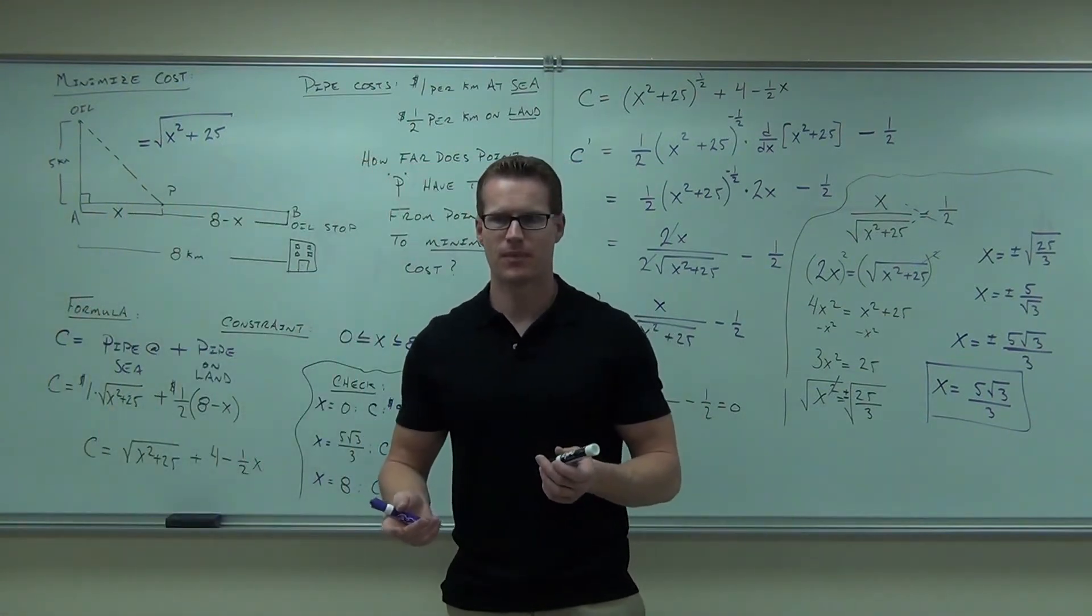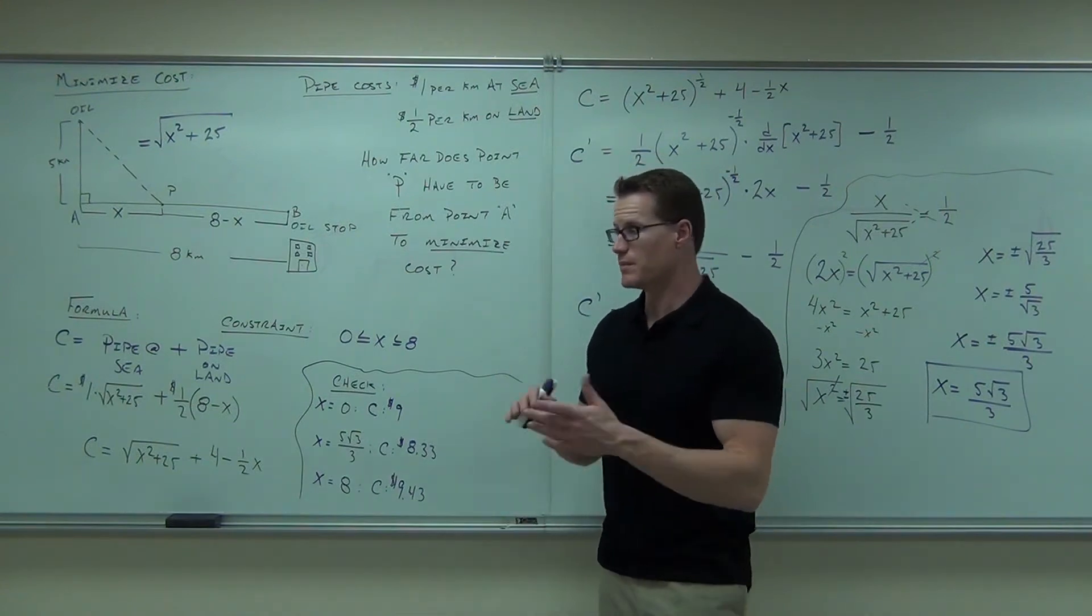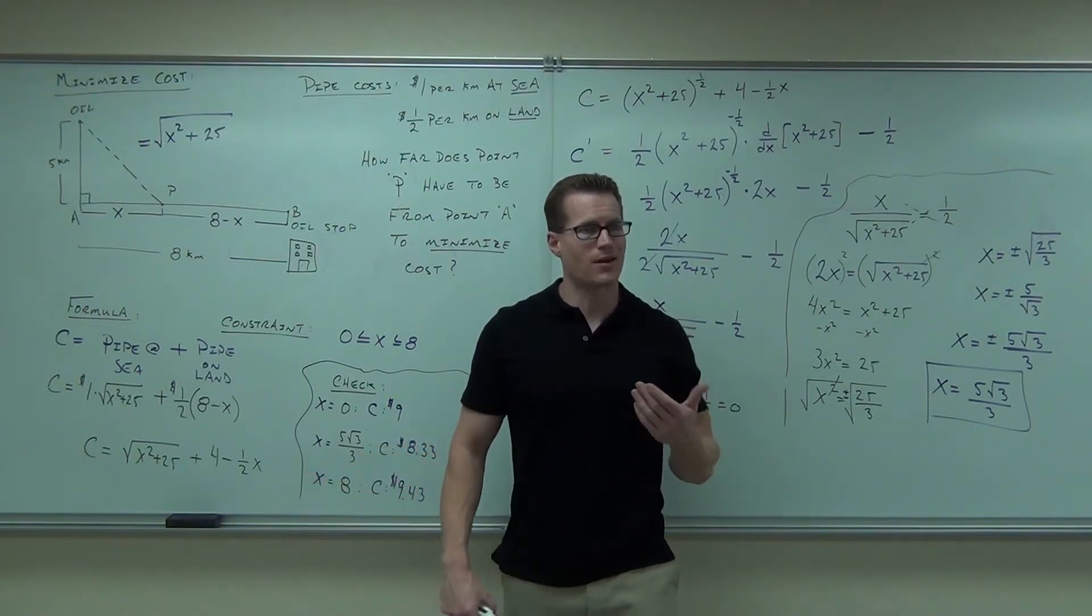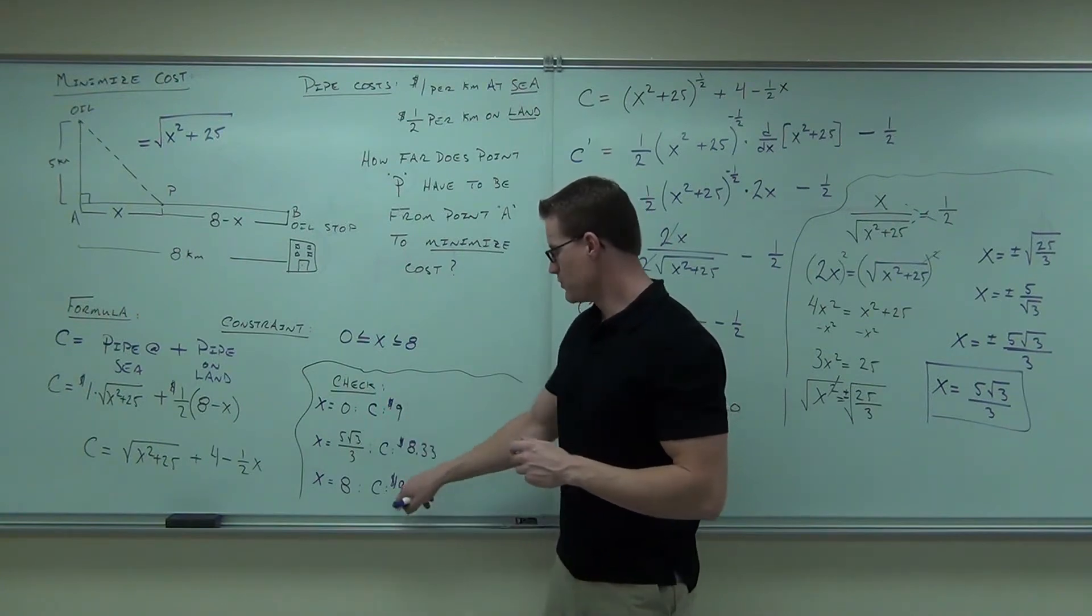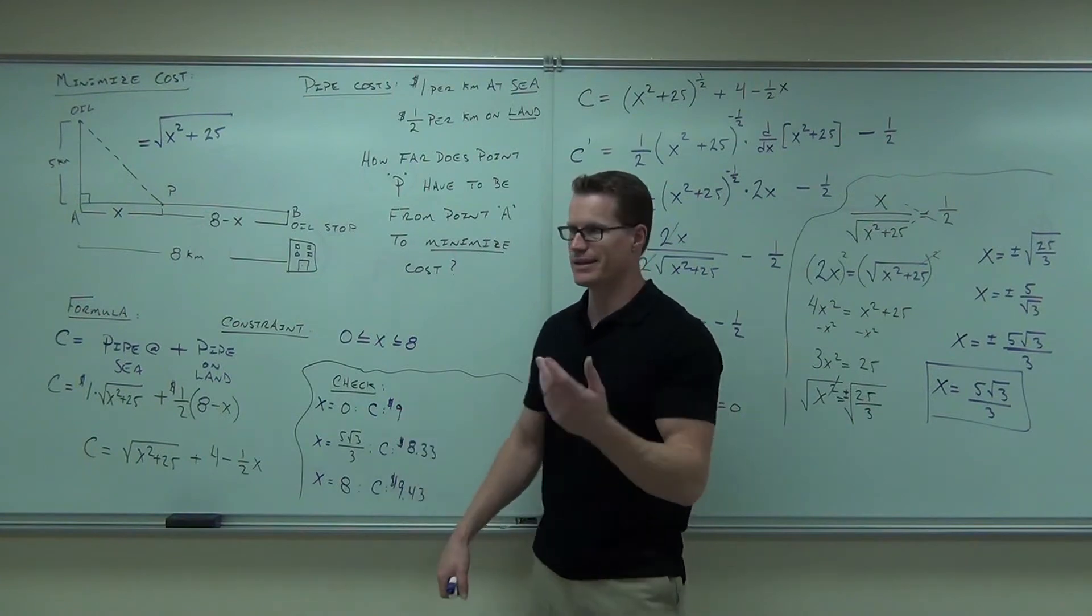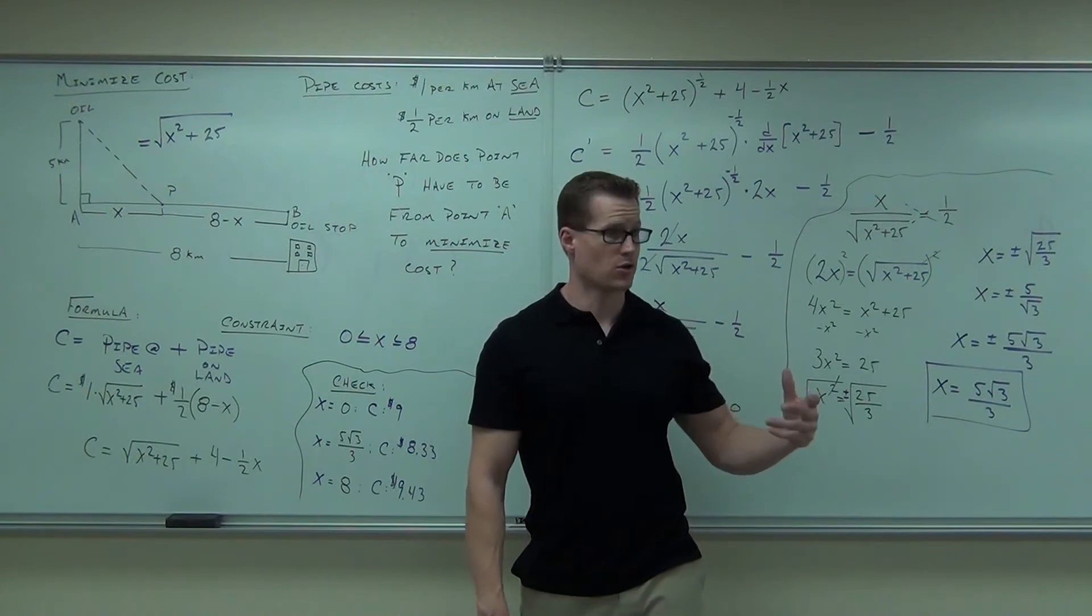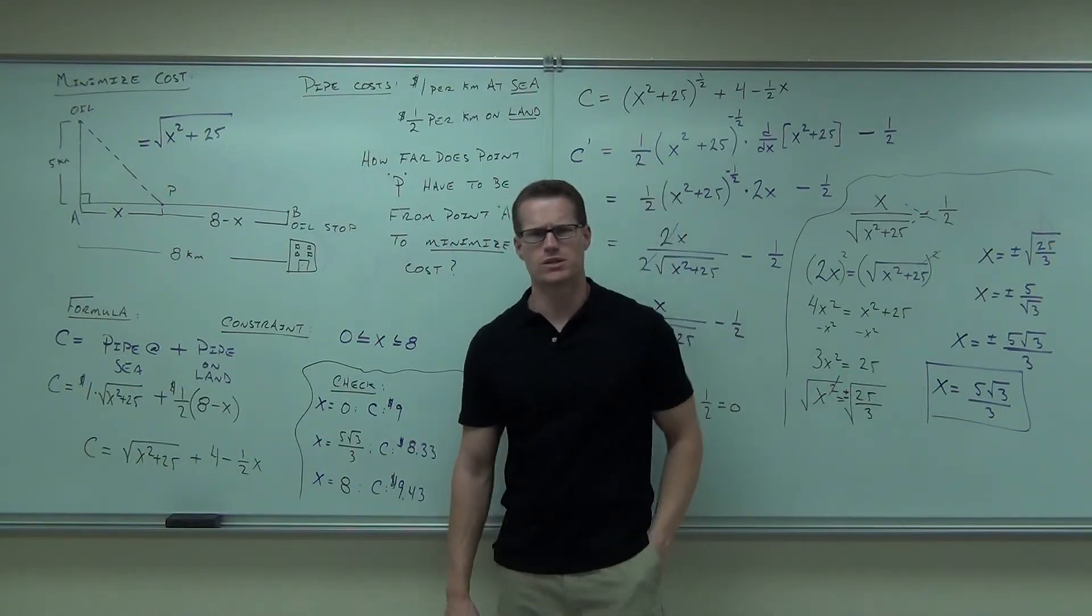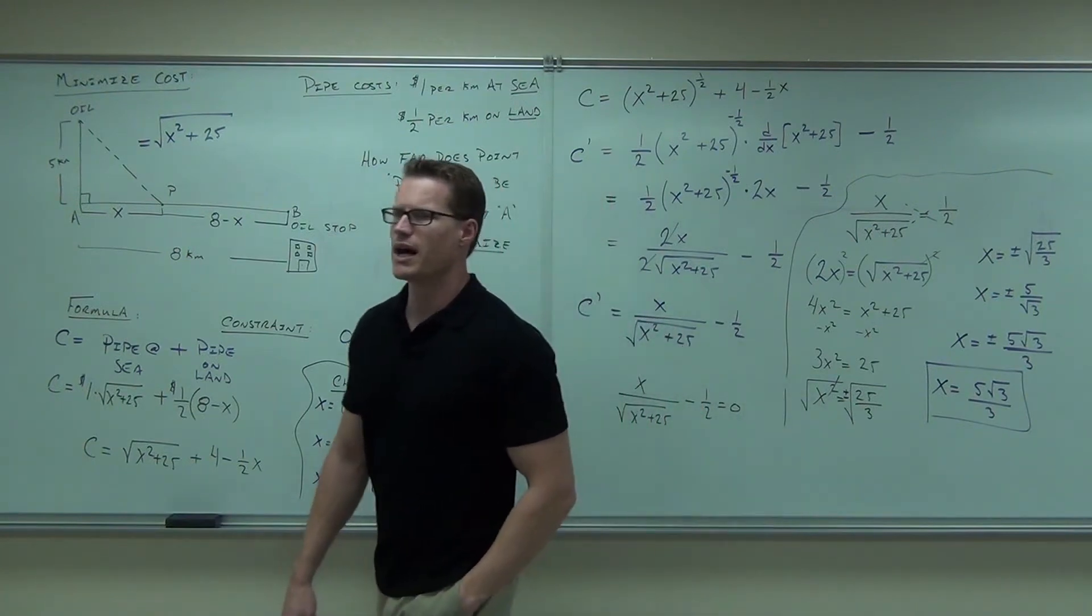Did we find the minimum? What is the minimum? Good. Okay, the minimum isn't 5 root 3 over 3. That's not what the minimum is. The minimum cost is actually $8.33. The maximum cost would have been $9.43. This 9, it's intermediate, but it's definitely not the minimum or the maximum.